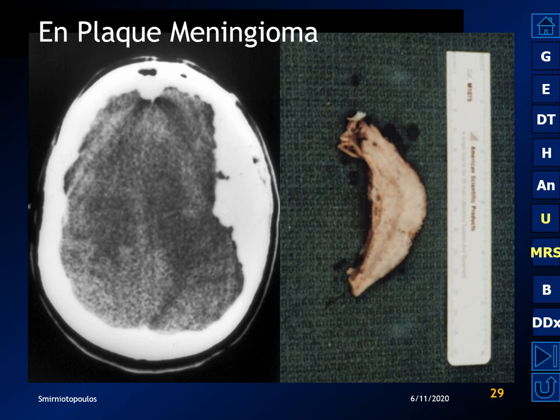On MR, they're going to be very different because the bone will have a much lower signal than the overlying meningioma.